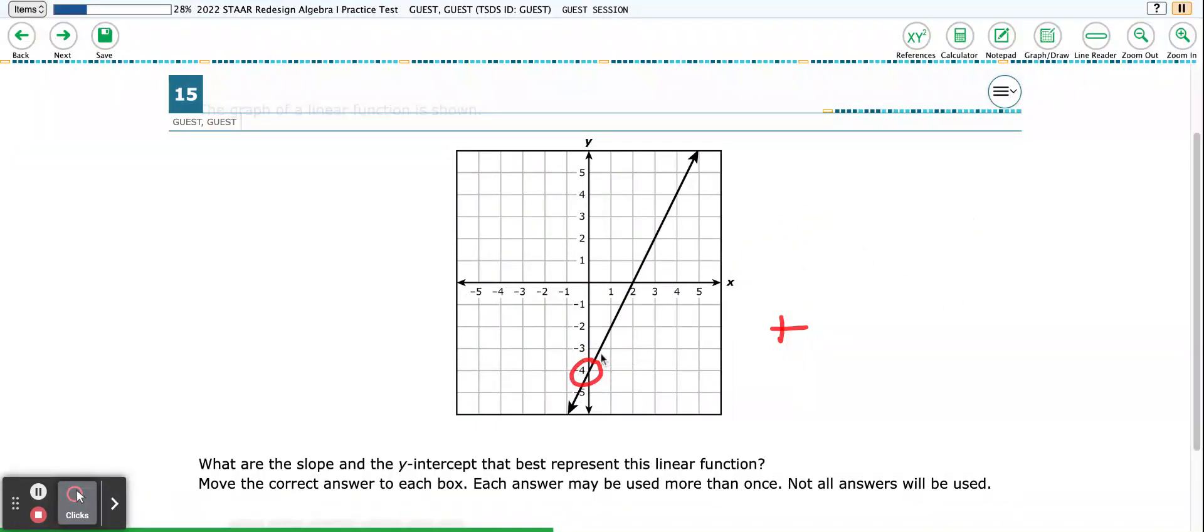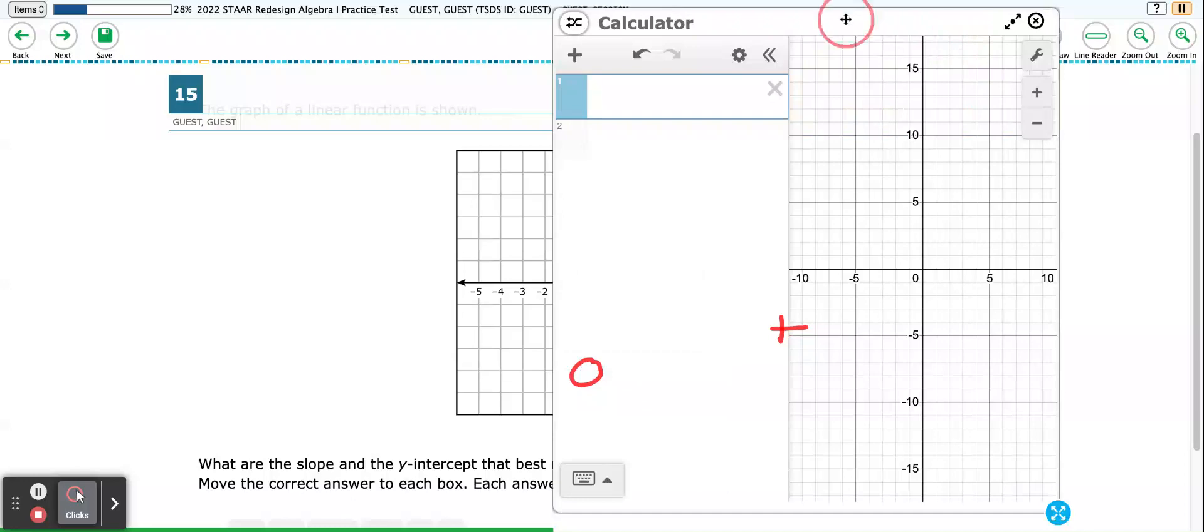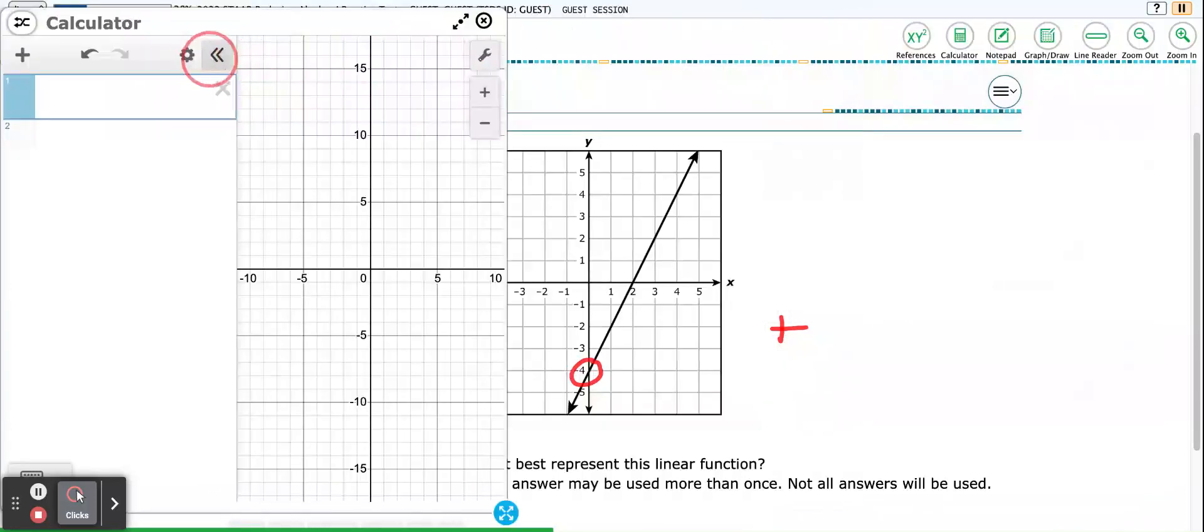So I'm going to use my y-intercept here, and then I'm also going to use my x-intercept, which is 2. We're going to use linear regression. So let me move my calculator to the left so that I can see my graph. So I'm going to put in a table. Now remember, for a table, all I need is two coordinates.